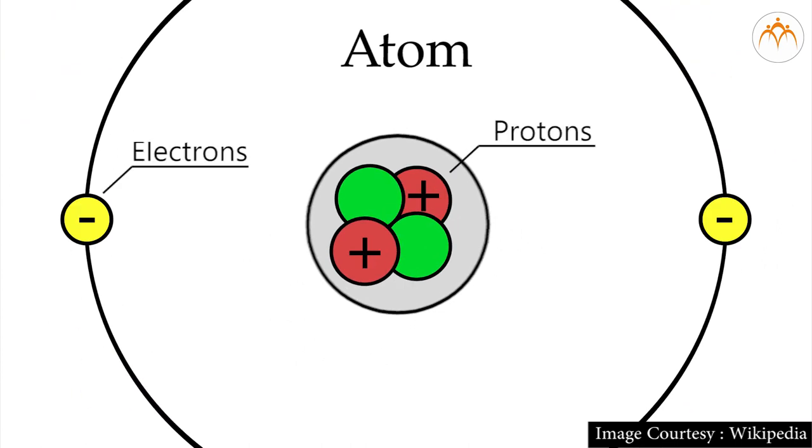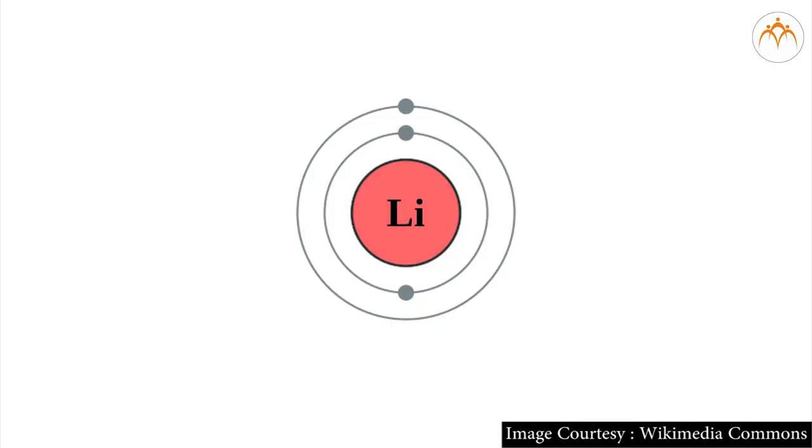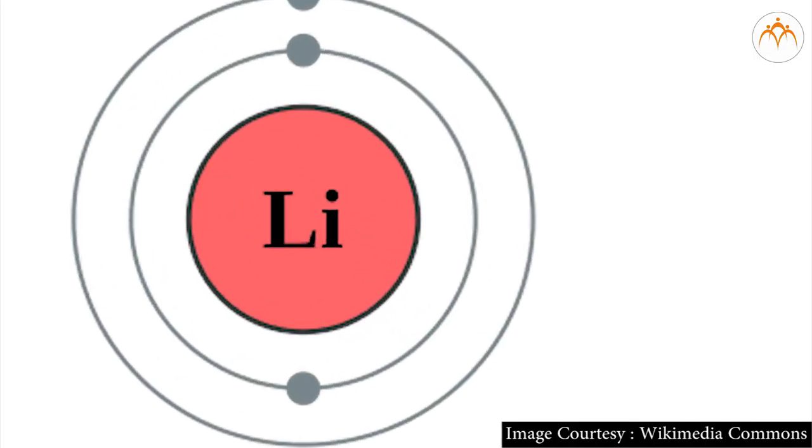Protons are positively charged, electrons are negatively charged, and neutrons are electrically neutral. In a circle, radius means the distance between the center of the circle and any point on the circle. Similarly, in an atom, the atomic radius is the distance between the nucleus of an atom and its outermost orbit.